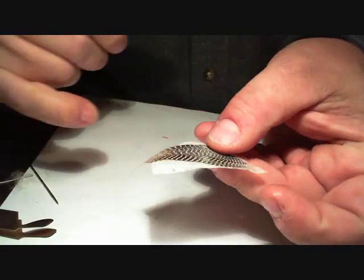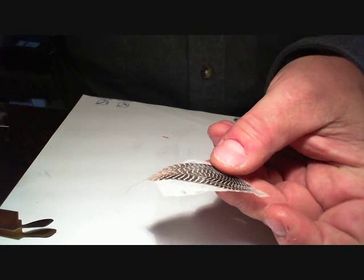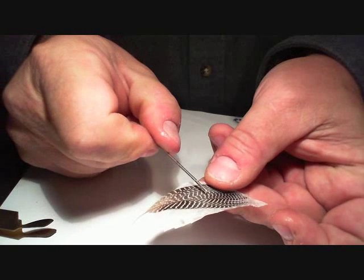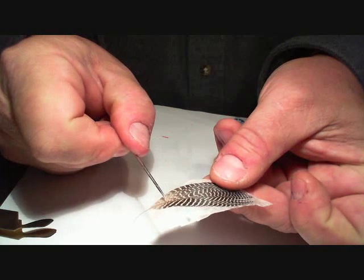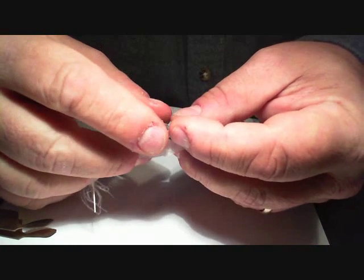The stem of the feather is located right in there. You want to fold the feather in half right along that stem.